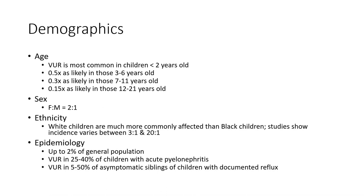Epidemiology: VUR occurs in up to 2% of the general population. VUR is found in 25 to 40% of children with acute pyelonephritis, and in 5 to 50% of asymptomatic siblings of children with documented VUR.